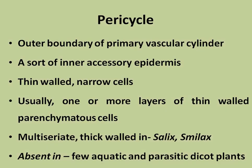After the endodermis, the second layer is known as the Pericycle or peri-rambha. The pericycle lies just below the endodermis, and its outer boundary is called the primary vascular cylinder. The pericycle cells are generally thin-walled.